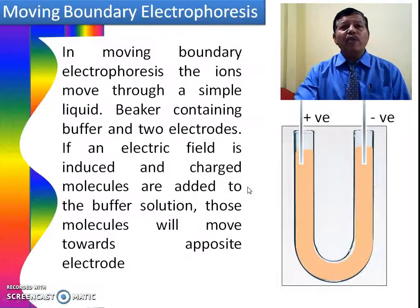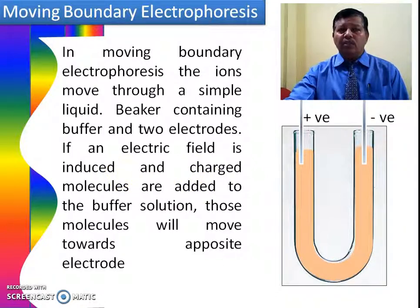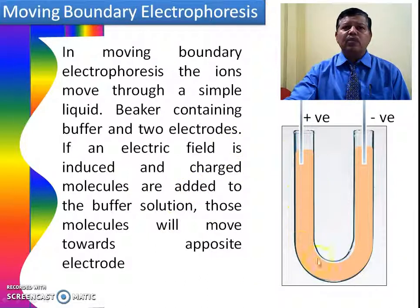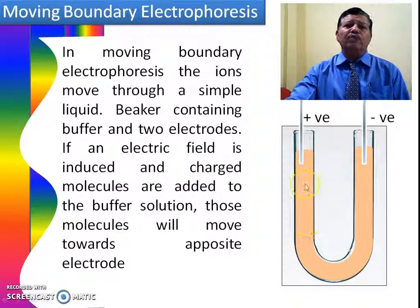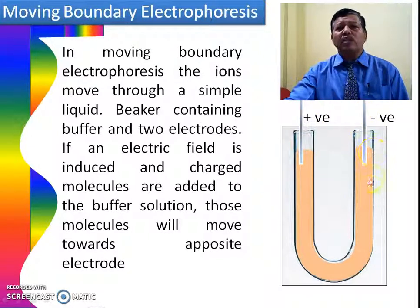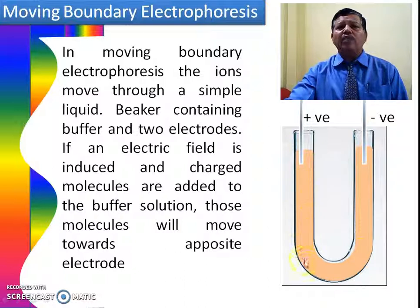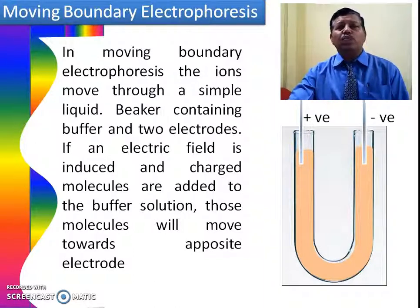In moving boundary electrophoresis, the ions move through a simple liquid. For example, in a U-tube containing buffer solution and the molecules or ions, when we connect the two electrodes to a battery, negative ions move towards the positive electrode and positive ions move towards the negative electrode from the solution.